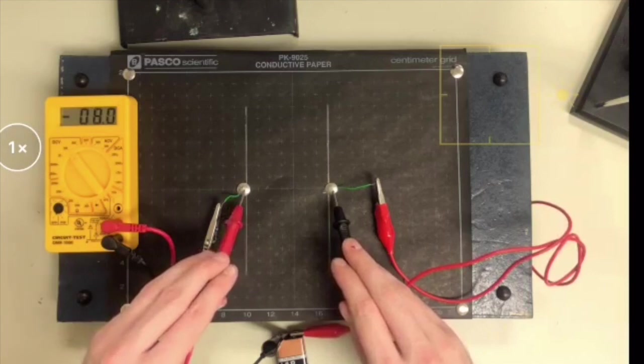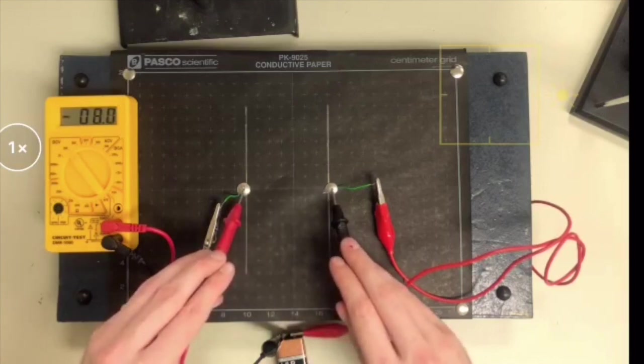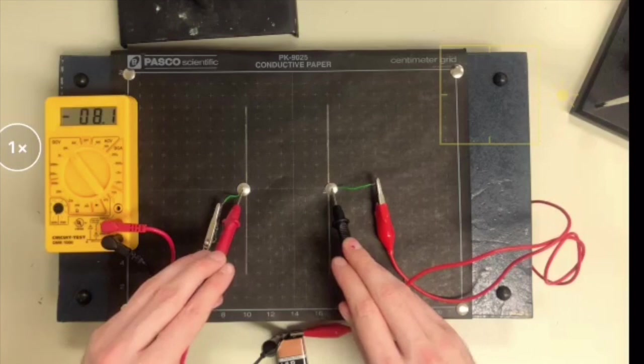So now what we can do is measure the potential difference across our plates, and it should be close-ish to, well, to eight for us, because we saw this battery had a voltage of 8.1, no longer a voltage of nine. So across the entire distance, the potential difference is just the same as the battery's potential difference. So that's just an idea of the setup. That's how you use these probes.